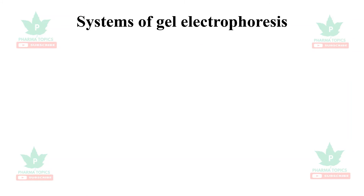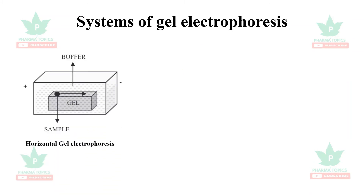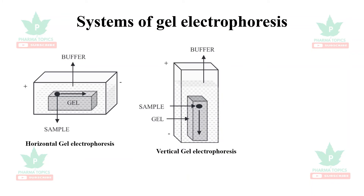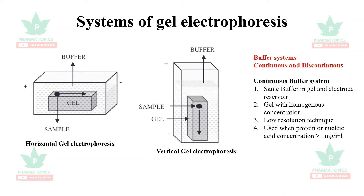The systems of gel electrophoresis include horizontal gel electrophoresis, where migration travels from left to right, and vertical gel electrophoresis, where it travels from top to bottom. The buffer systems used are of two types: continuous and discontinuous. The continuous buffer system contains the same buffer in the gel and electrode reservoir; the gel is homogeneous in concentration but is a low resolution technique.